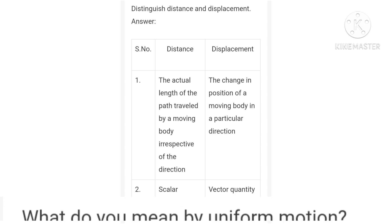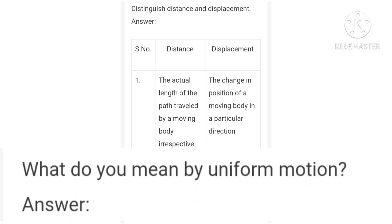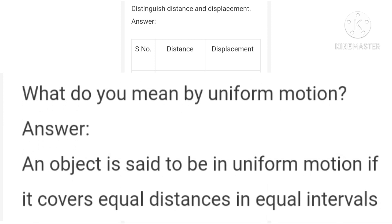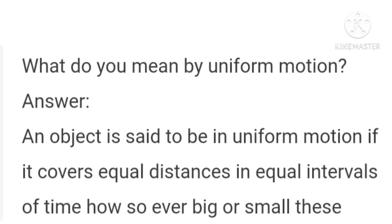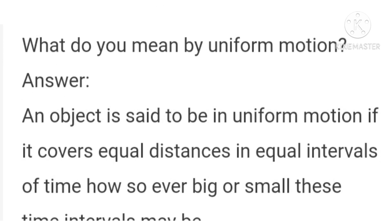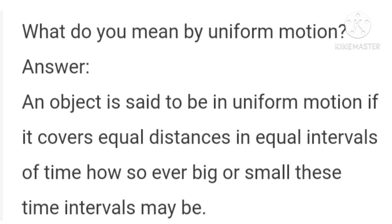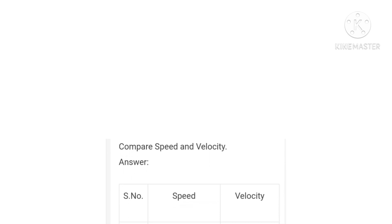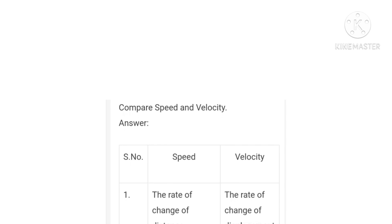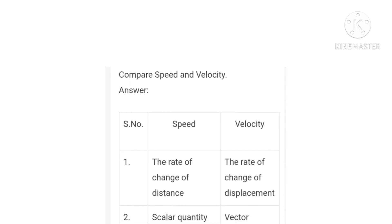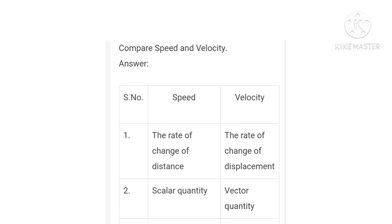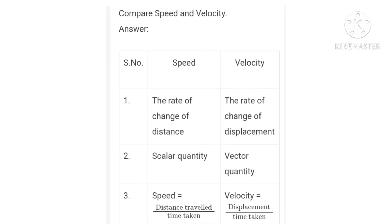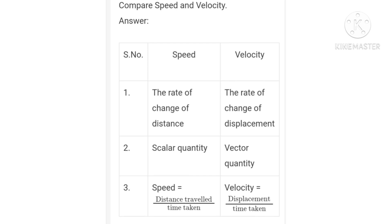Question 3: What do you mean by uniform motion? An object is said to be in uniform motion if it covers equal distances in equal intervals of time, howsoever big or small these time intervals may be. Question 4: Compare speed and velocity. Speed is the rate of change of distance — it is a scalar quantity; speed equals distance traveled divided by time taken. Velocity is the rate of change of displacement — it is a vector quantity; velocity equals displacement divided by time taken.